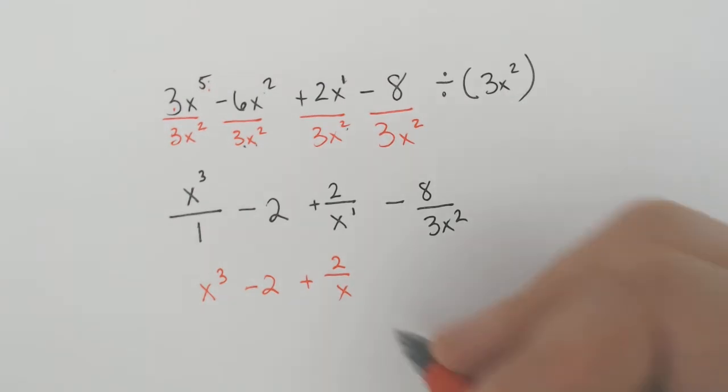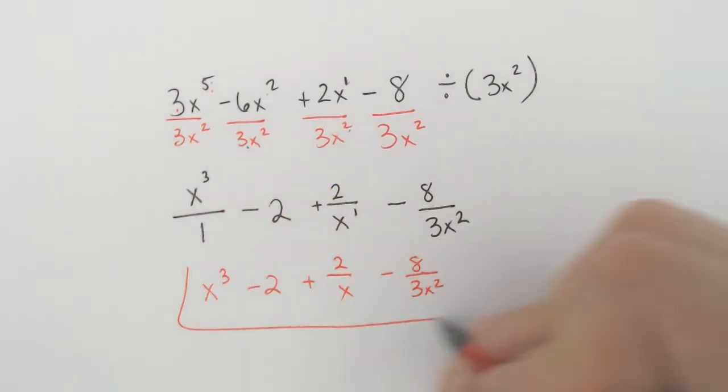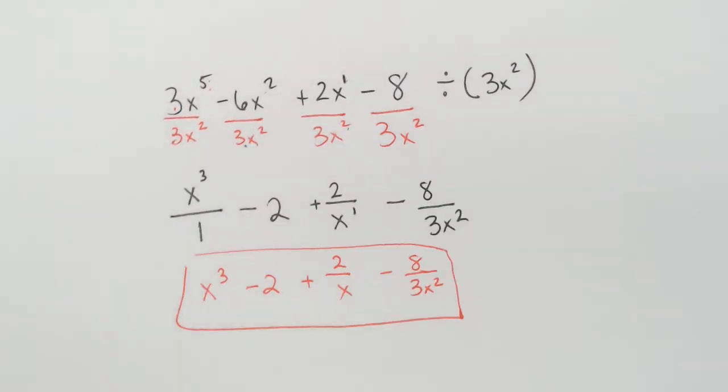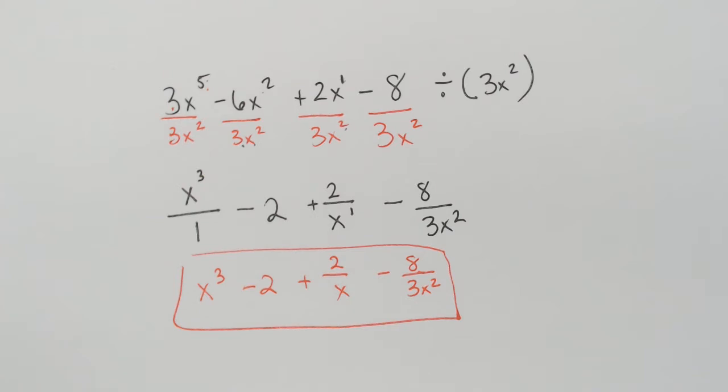which could be rewritten as x to the third minus 2 plus 2 over x. You don't need to write x to the first. And then minus 8 over 3x squared. So sometimes these are flat out ugly as a final answer, but sometimes they're not.